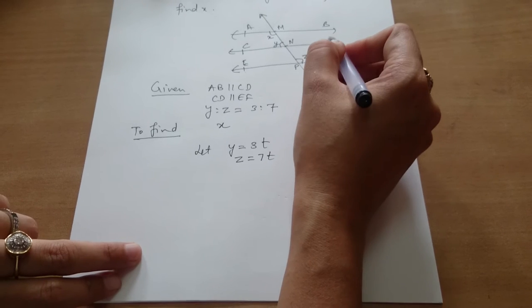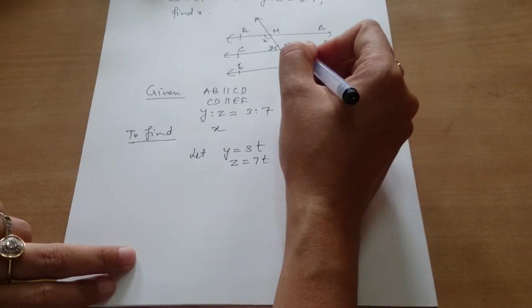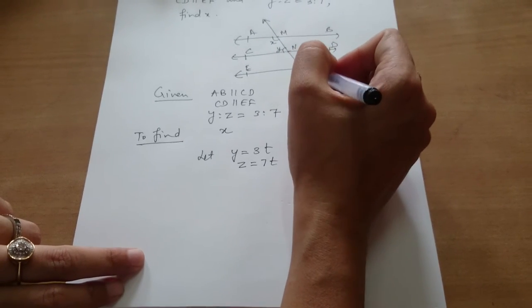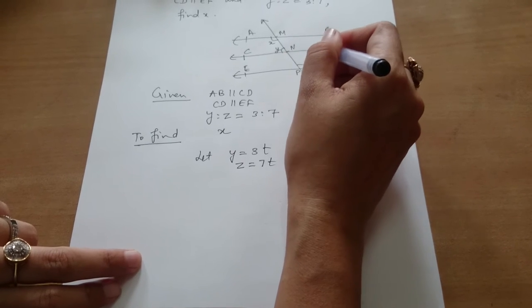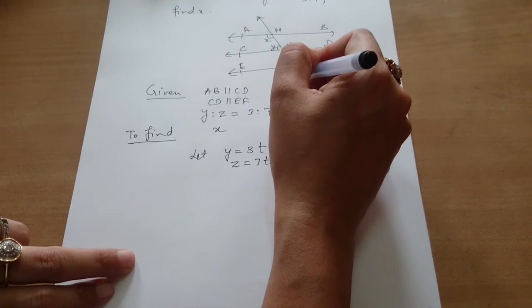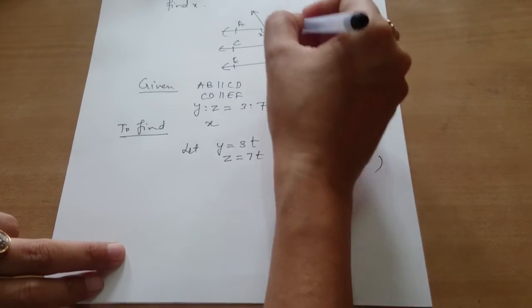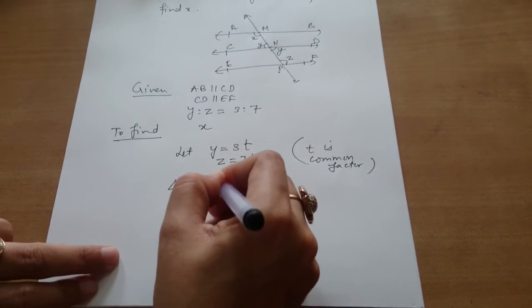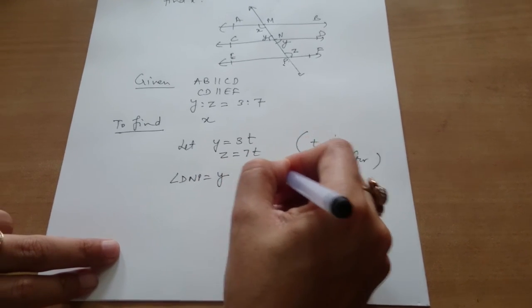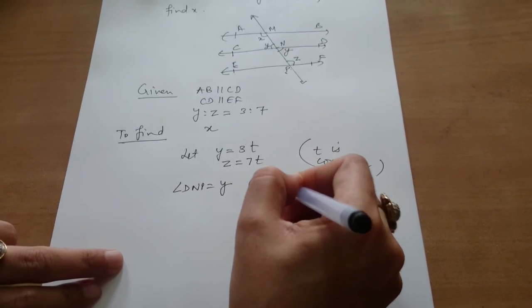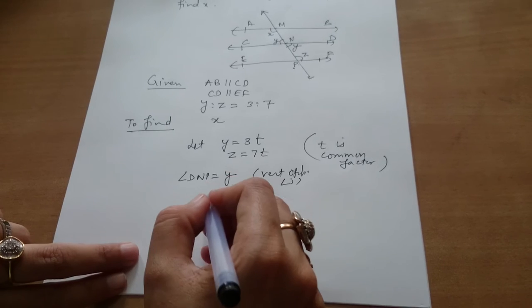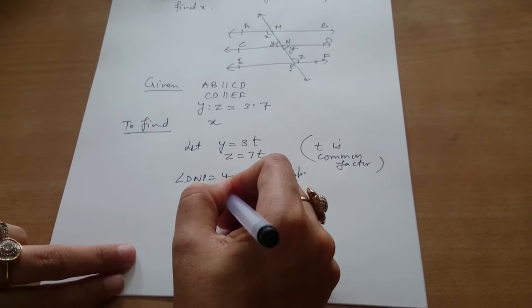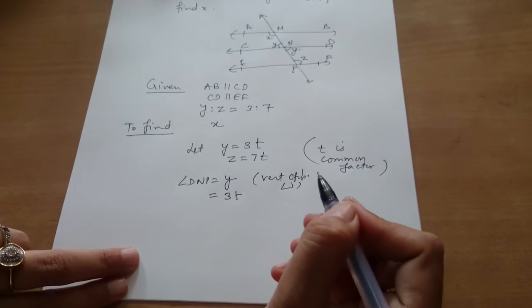So here in this diagram, angle D and P will be Y. Y equals the vertically opposite angle, which is equal to 3T.